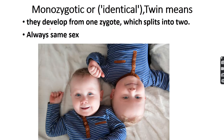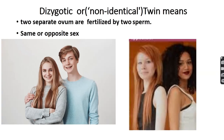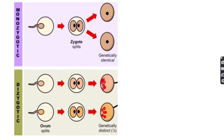Monozygotic twins develop from one zygote which splits into two; sex is always the same. Dizygotic twins occur when two separate ova are fertilized by two separate sperm; sex may be the same or opposite.